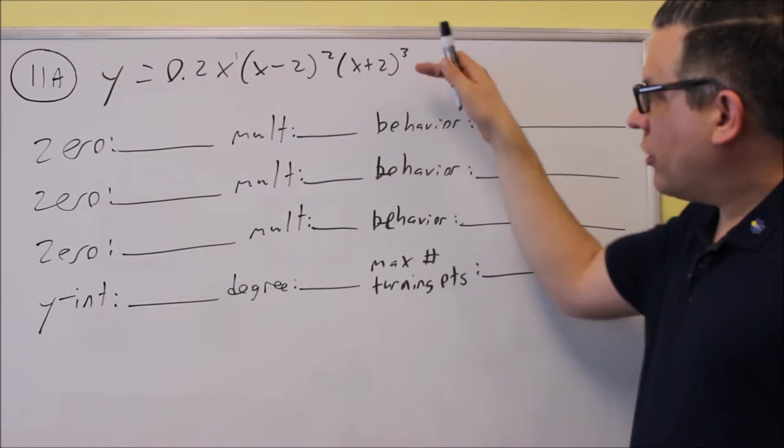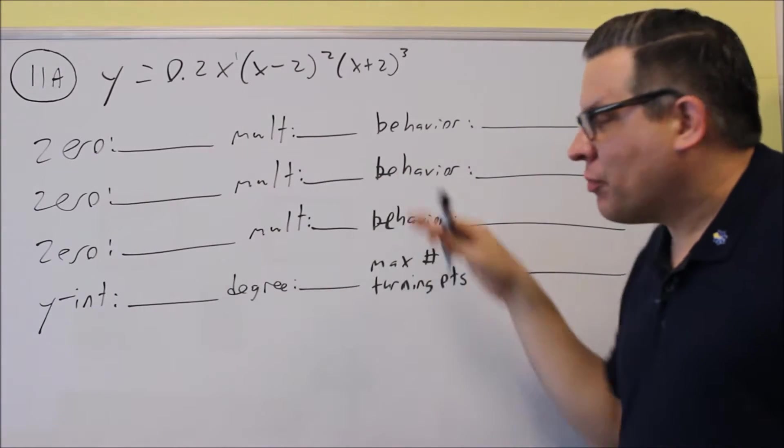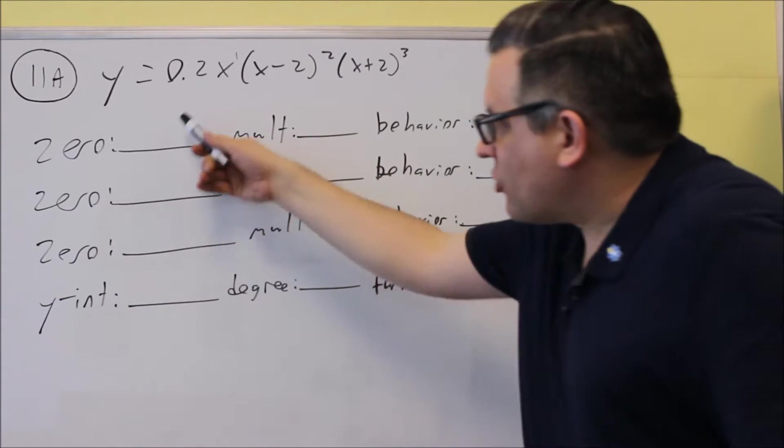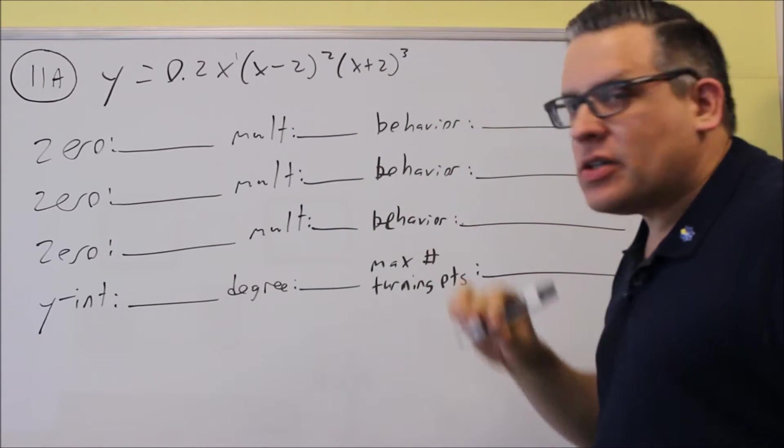Alright, for 11a, we've got one of these that we have to graph, and you're going to have all this information provided on your test, all these different blanks you want to fill in. A zero is the same thing as a y-intercept, that's just what makes each individual piece equal to zero.